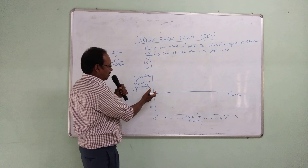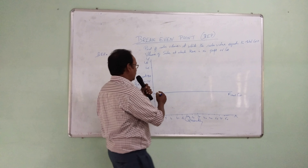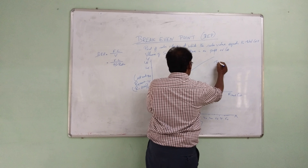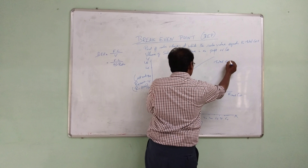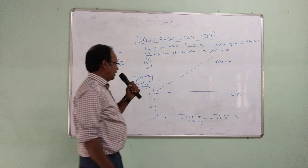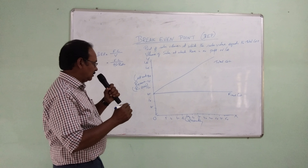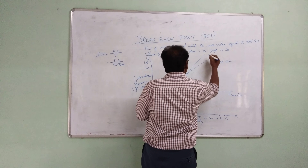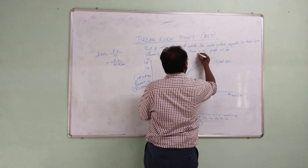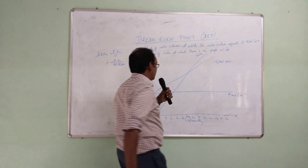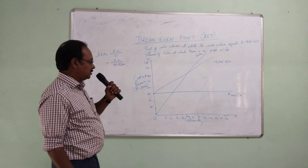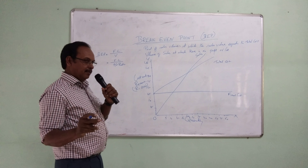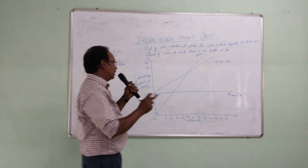The fixed cost line is drawn, and then we increase the cost to get the total cost line. This total cost line intersects with the sales level line at a certain point. That point is the break even point.